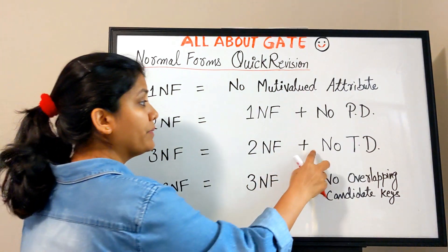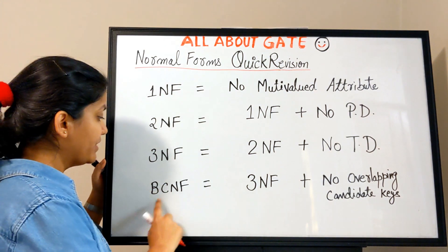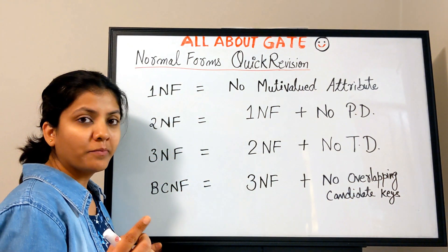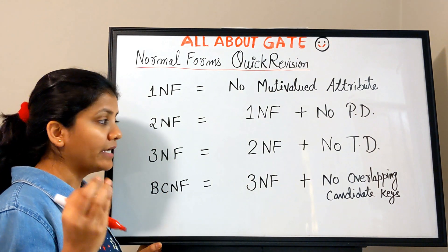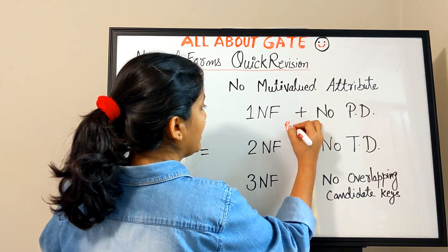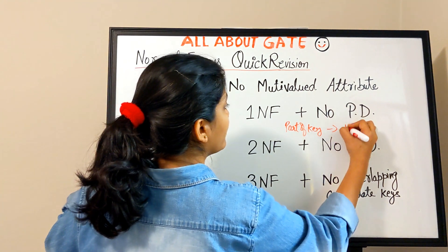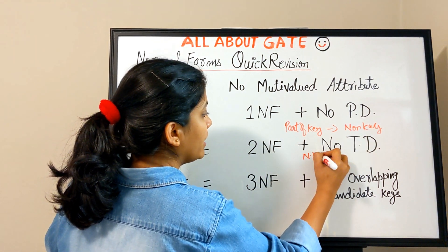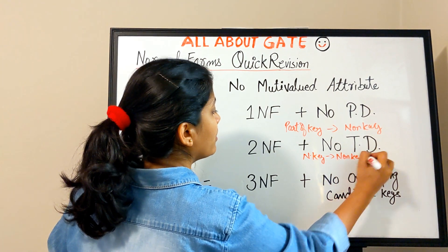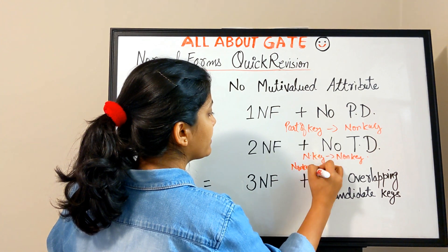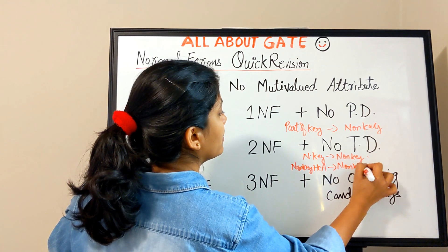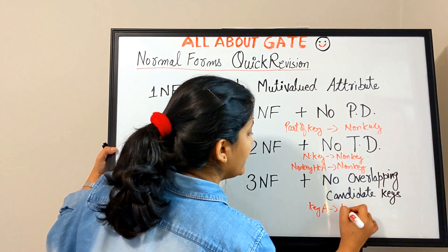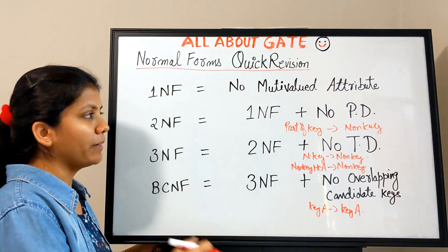Third Normal Form: it should be in 2NF plus no transitive dependency. BCNF: it should be in 3NF plus no overlapping candidate keys. To summarize the dependency types — partial dependency is a part of a key determining a non-key; transitive dependency is a non-key determining a non-key, or non-key plus key determining a non-key; overlapping candidate keys means a key attribute determining another key attribute.